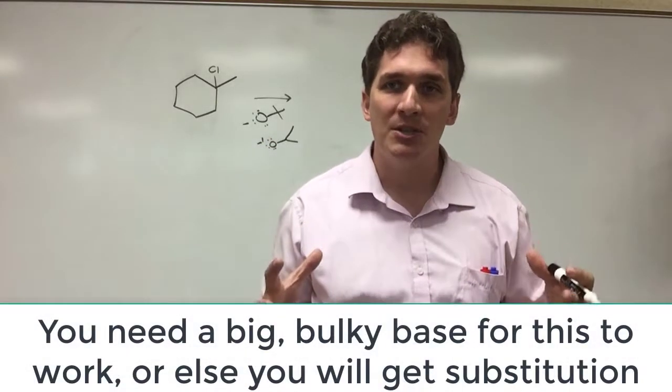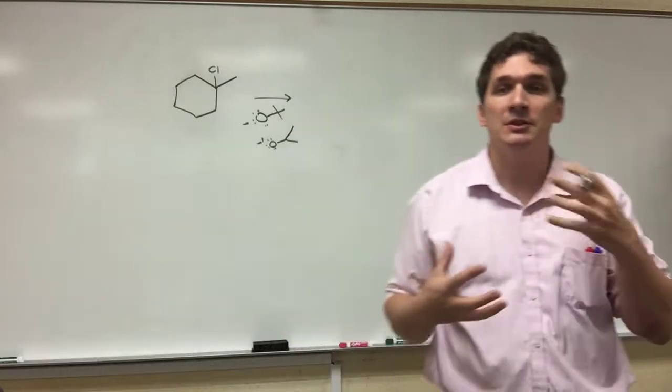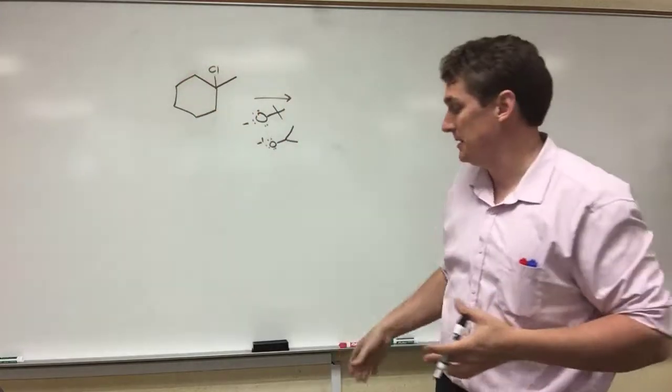But we need these big carbon chains hanging on the back of our O minus group because we don't want to do a substitution reaction. If this were hydroxide, it would just replace the Cl and we'd get an alcohol back in its place.